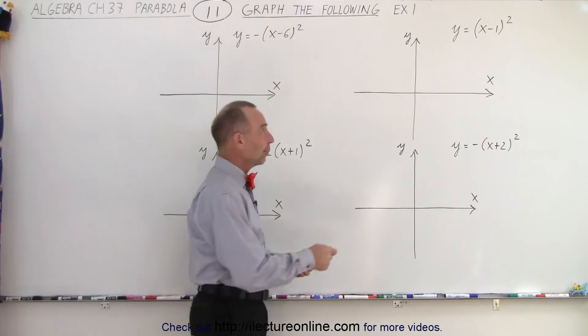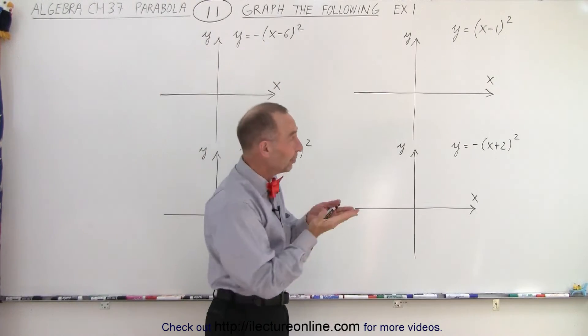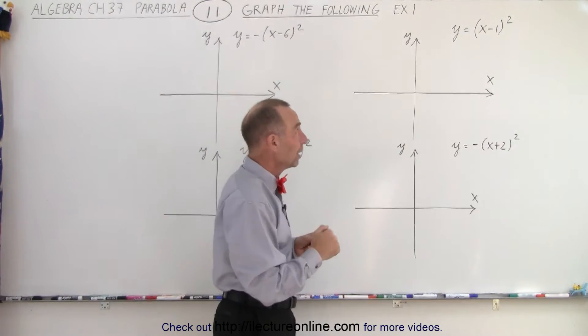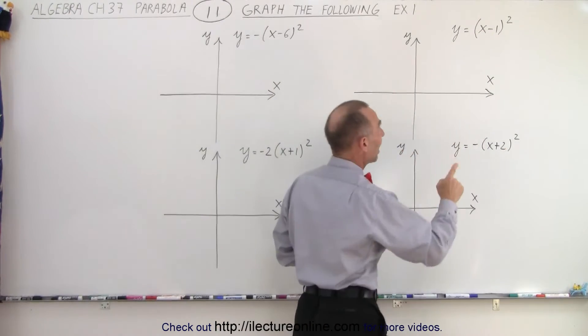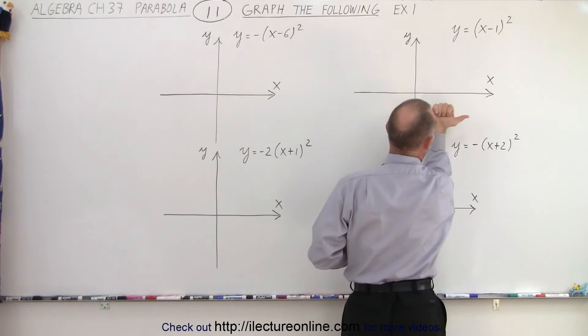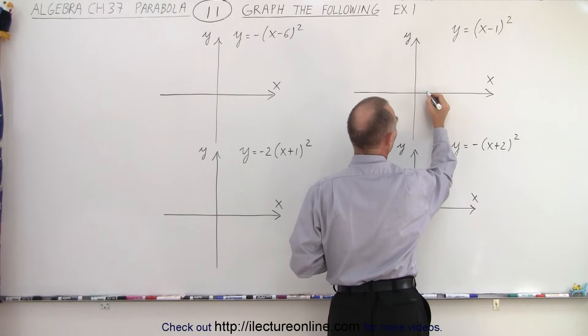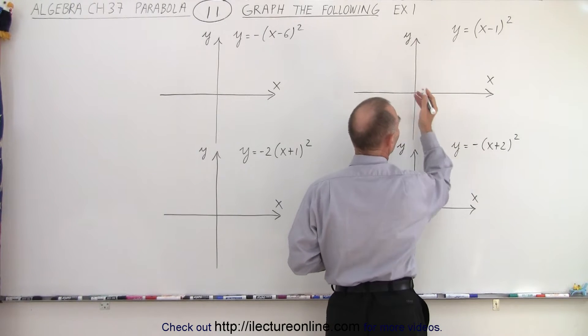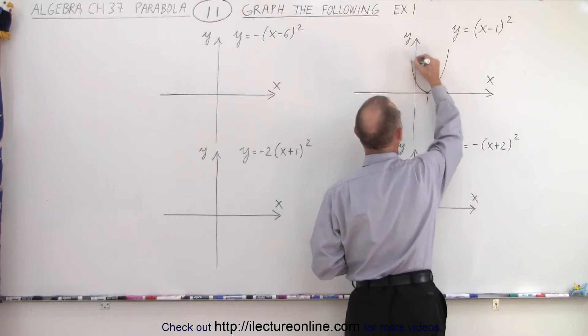When we go to our first one, notice there's no negative sign. If it's positive in front, that means it opens upward. There's no constant at the back, so it's not raised up or down, but we do have x minus 1, and minus 1 means it's shifted to the right by 1. The vertex will be on the x-axis, the distance 1 to the right, and the parabola will open upward, so it will look like this.